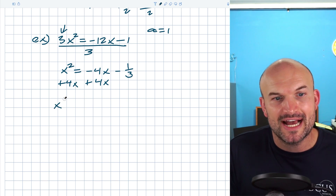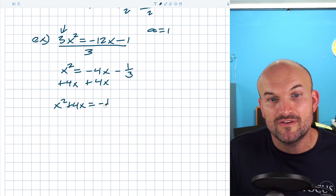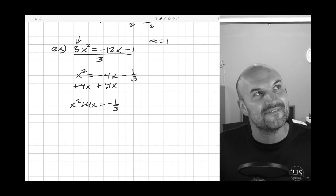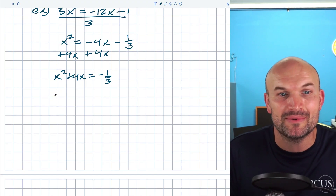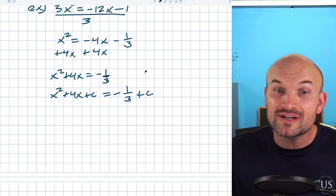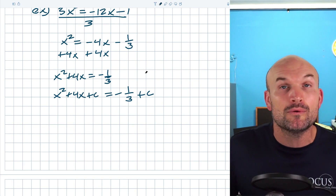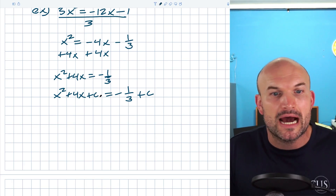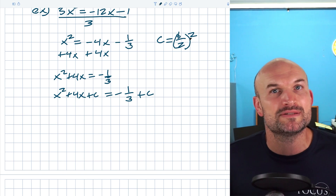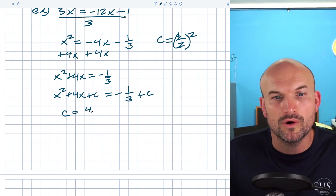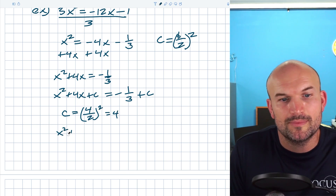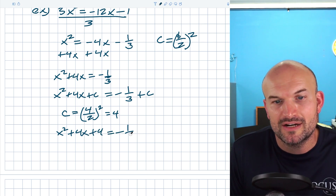I'll leave the −1/3 on the right. To create the perfect square trinomial I add the 4x, giving x² + 4x = −1/3. Now I add c to both sides: x² + 4x + c = −1/3 + c. Don't forget to add c to both sides — whatever you do on one side you have to do on the other. Now I need to find c: c = (b/2)² = (4/2)² = 2² = 4.